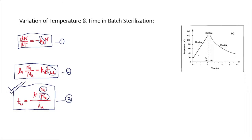In batch sterilization of liquids there are mainly three phases: heating period, holding period, and cooling period. In the heating period the temperature of the media rises continuously. After a certain period you hold that temperature for sterilization — this is the holding period. Thereafter the media cools back toward its original temperature — this is the cooling period. N1 represents viable organisms before the holding time, and N2 represents viable organisms after the holding time.